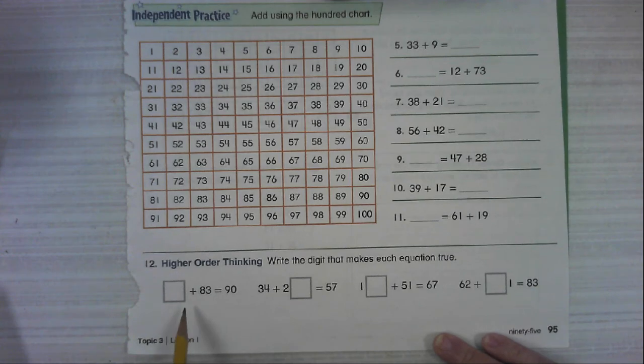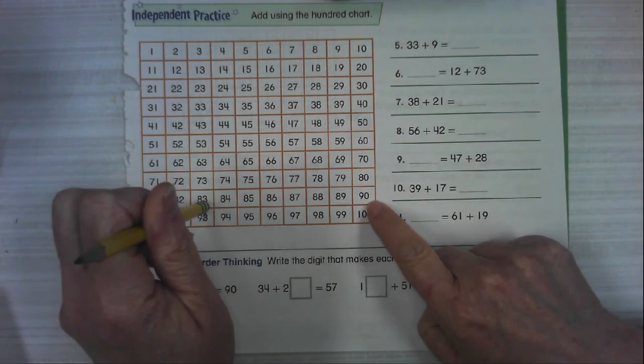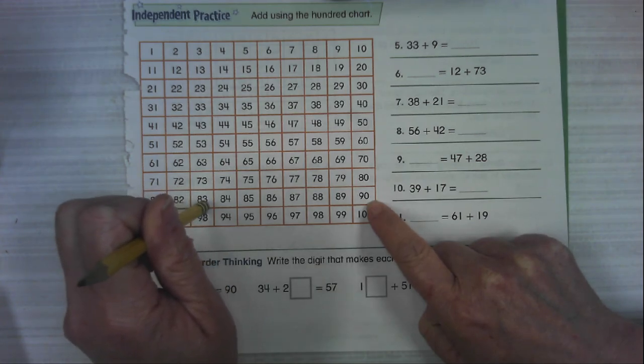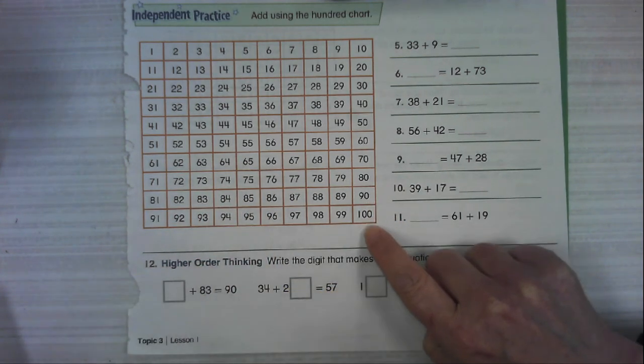Write the digit that makes each equation true. So for this one, we're going to add something plus 83 and get to 90. So if we start here, how many moves do we need to make to get to 90? Okay, you can do that. Just move your fingers or move your pencil or draw a line and count them.